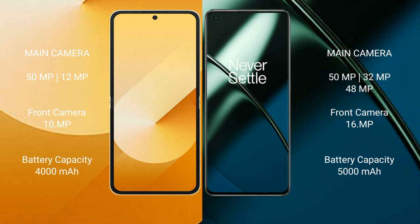For cameras, the Samsung Galaxy Z Flip 6 features a dual rear camera setup: 50MP and 12MP, with a 10MP front camera. The OnePlus 11 features a triple rear camera setup: 50MP, 32MP, and 48MP, with a 16MP front camera.